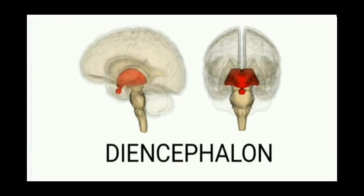The Hypothalamus controls sleeping, eating, and related functions. There is also the Optic Chiasma. This is why we know our left hemisphere controls the right side of the body, and the right hemisphere controls the left side. We control the cross and the midpoint of the optic chiasma.